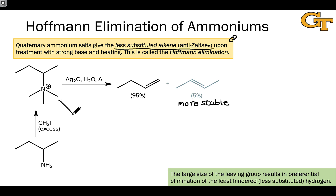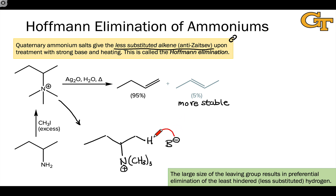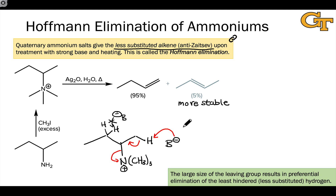The idea isn't terribly complicated — it's just a steric effect where the very large size of the leaving group, the trimethylammonium group, results in preferential deprotonation at the less substituted position rather than the more substituted position. The base has a much more difficult time reaching the more sterically hindered hydrogens due to the very large leaving group. So the less substituted hydrogen is deprotonated preferentially, and the major product is the less substituted alkene. This is called Hofmann elimination.